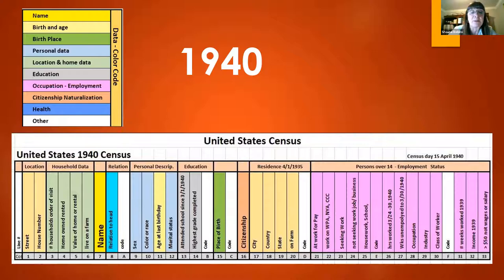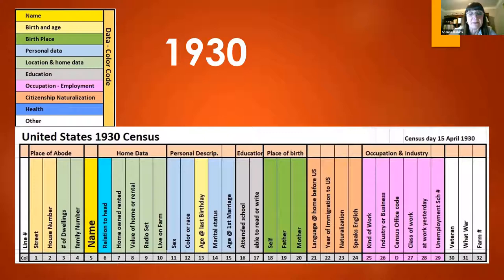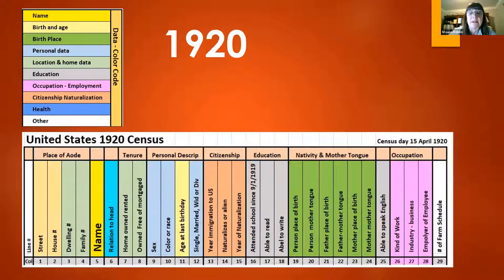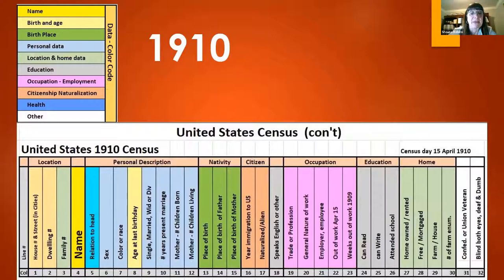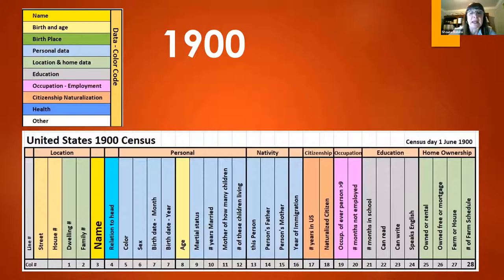You'll notice the 1930 census isn't the same as others — there's more occupation and industry on that one. The 1920 census has more about native languages and native places of birth, so you have more birthplace green information. In 1910, you start to get some location and home data and a lot more about occupation. Each census is a little bit different, and recognizing what's on it helps us learn more about that ancestor and details we otherwise wouldn't know.